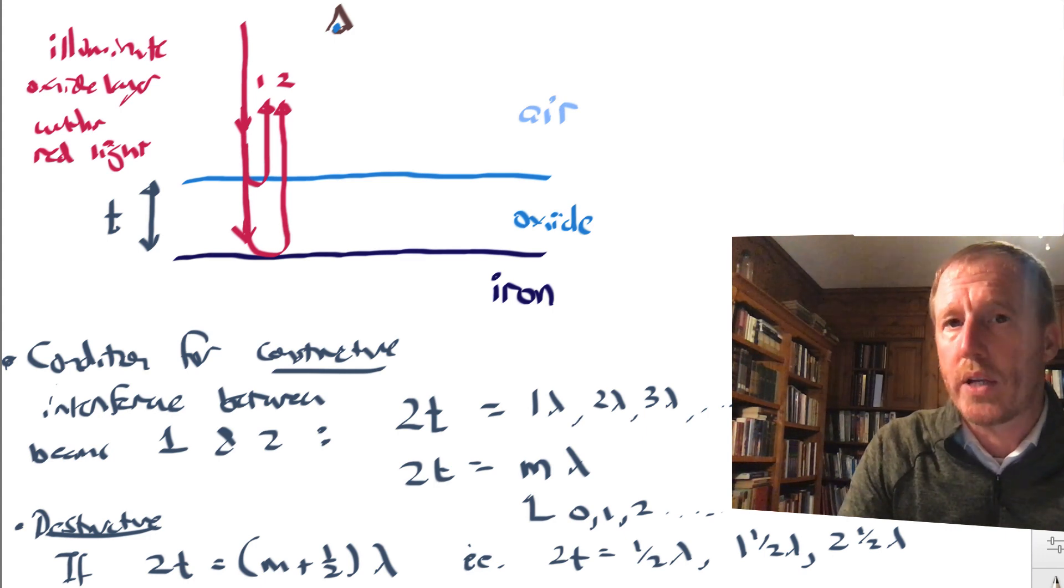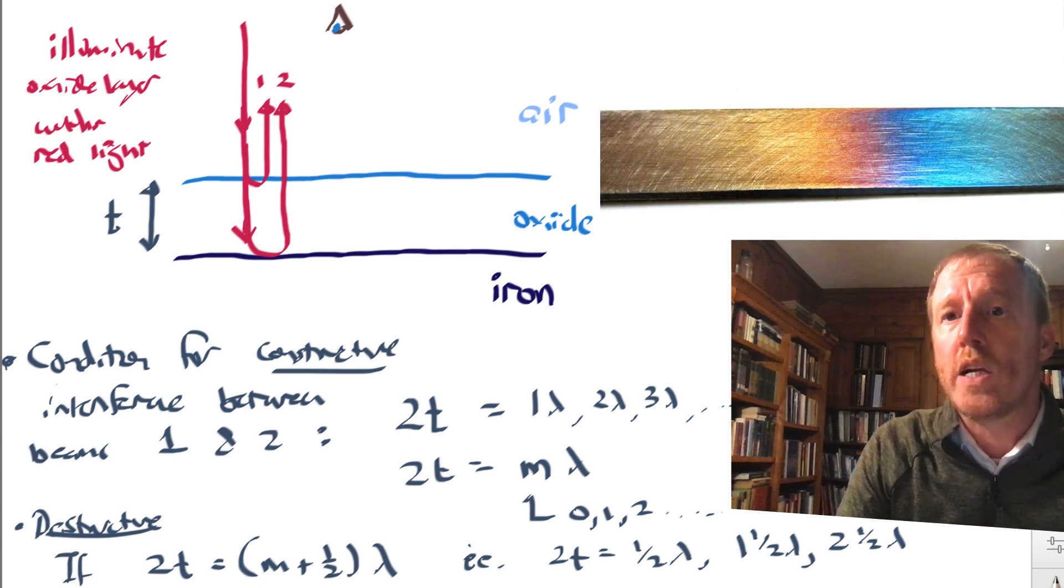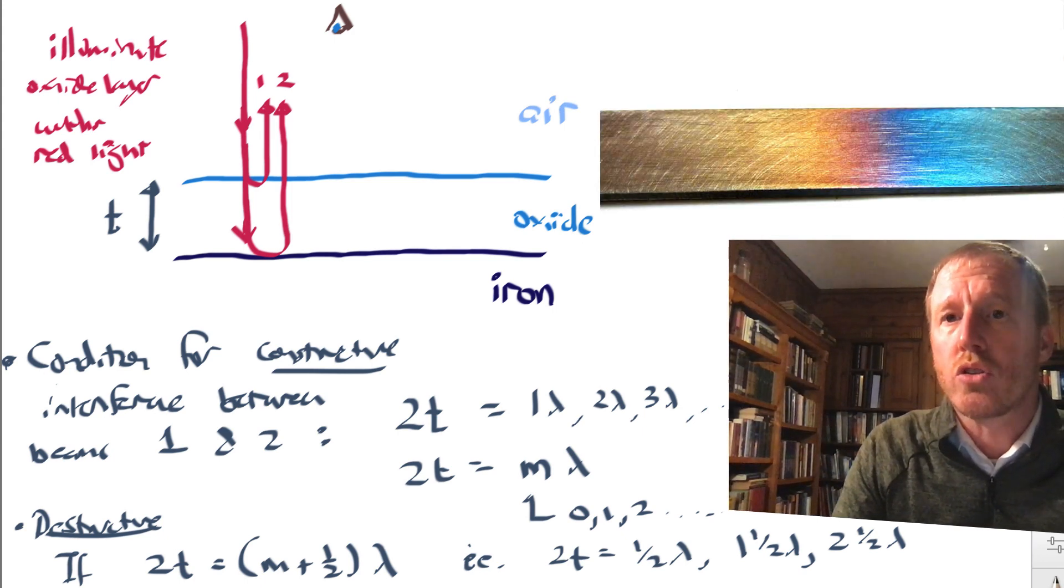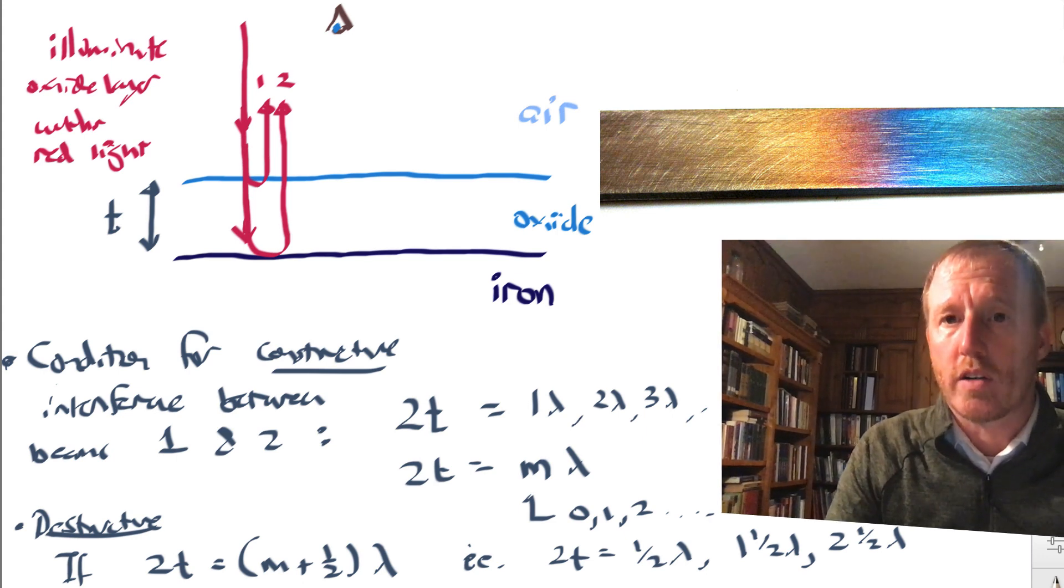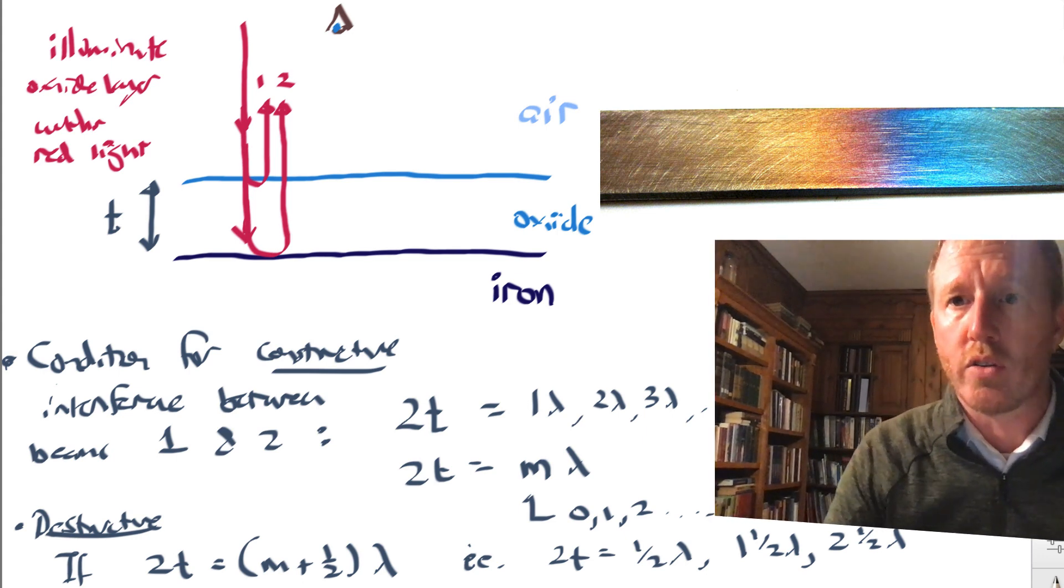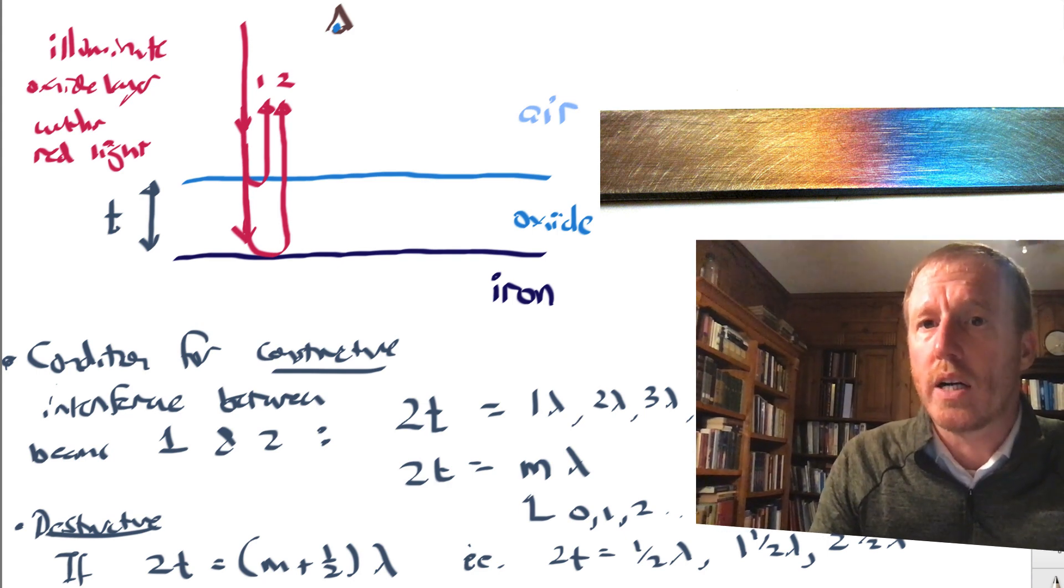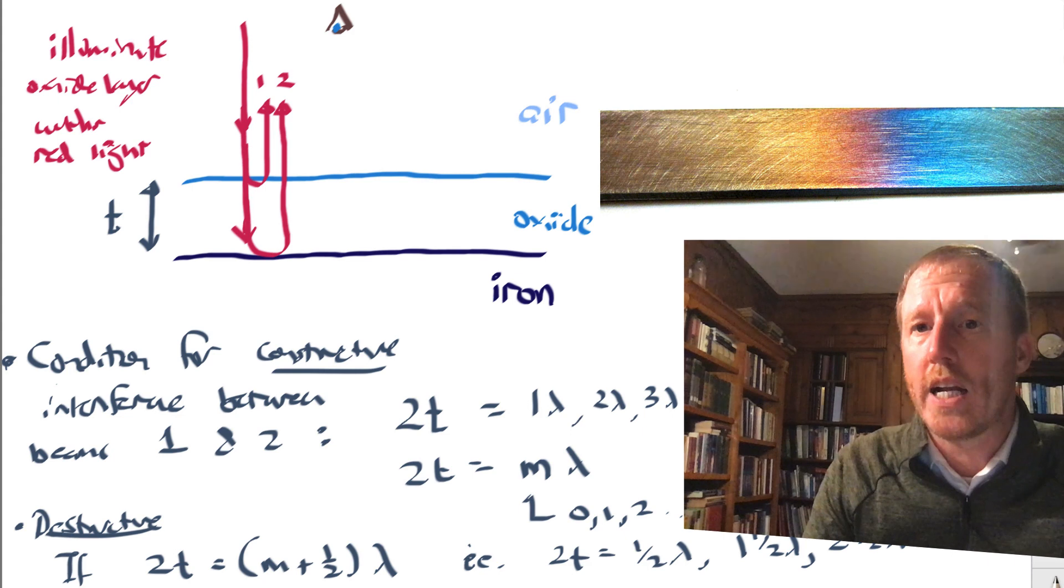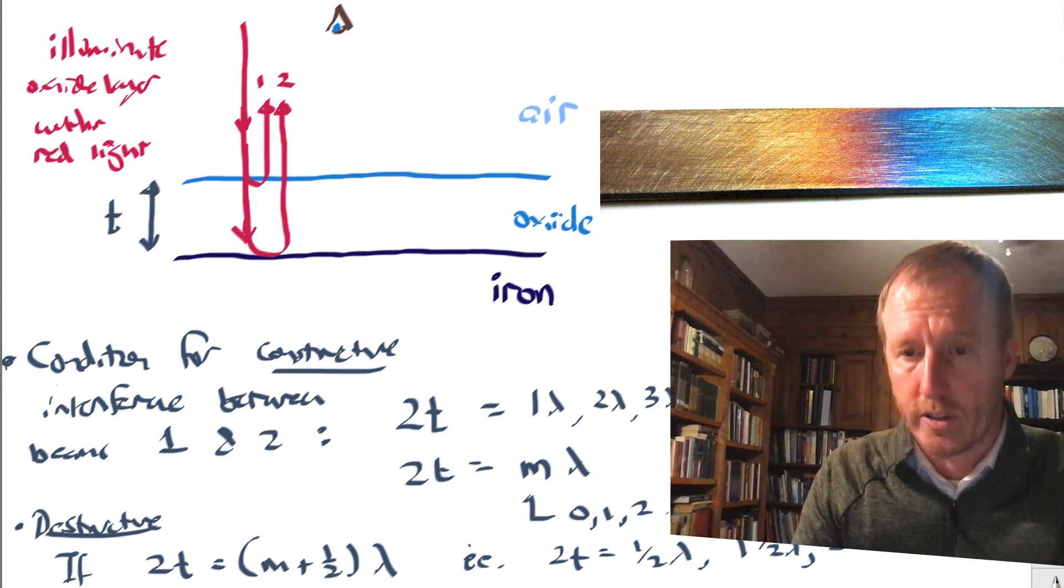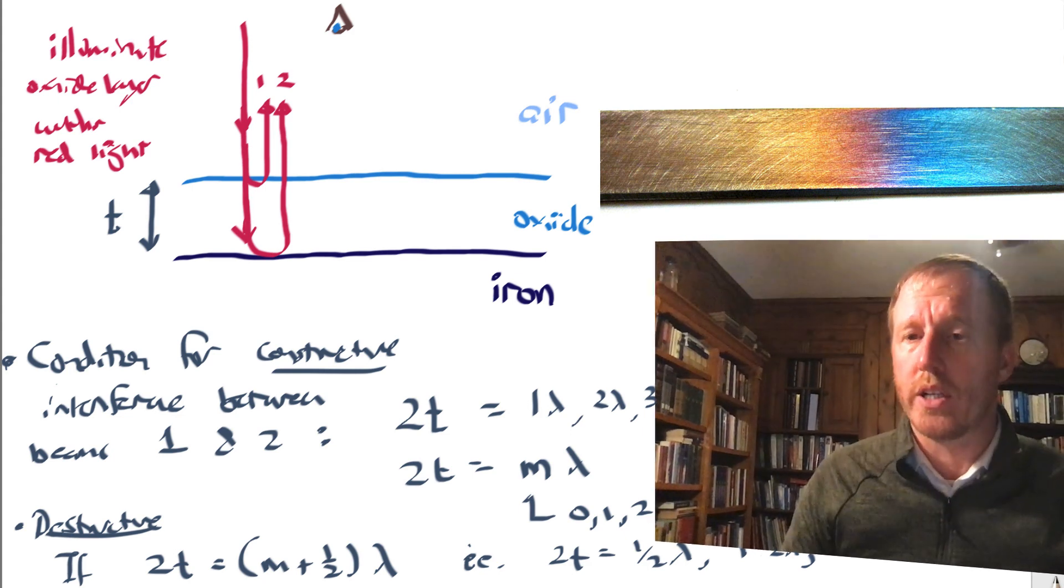And if, for example, the oxide layer had differing thicknesses over different regions of the iron, then certain colors would be constructively interfering in certain regions and not in others. In other words, this oxide layer would produce variations in color of the iron. That's exactly what Young is talking about here.